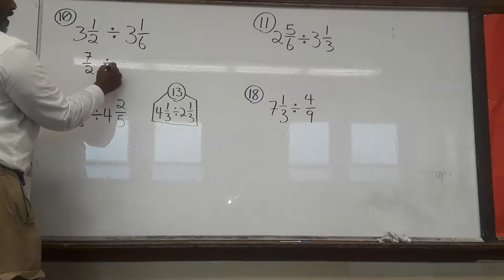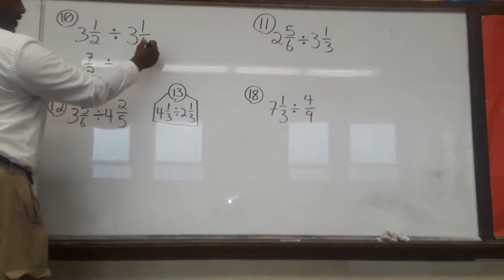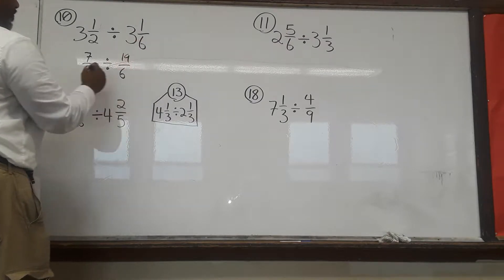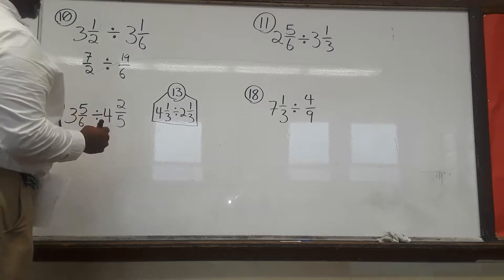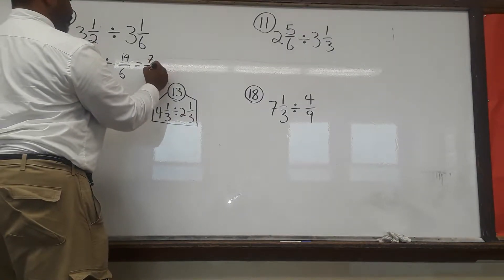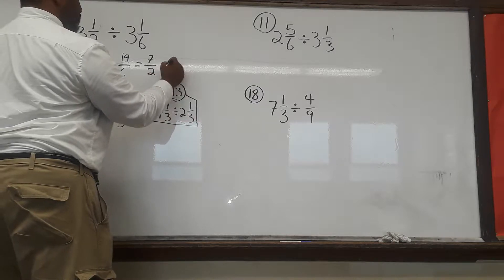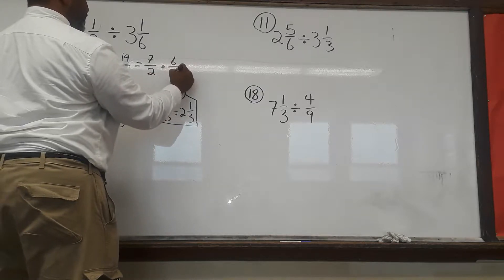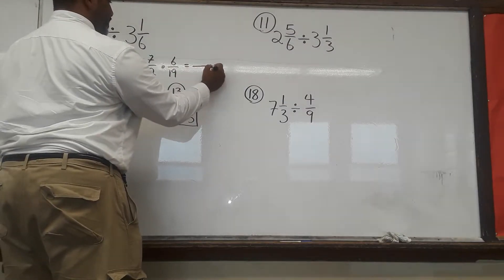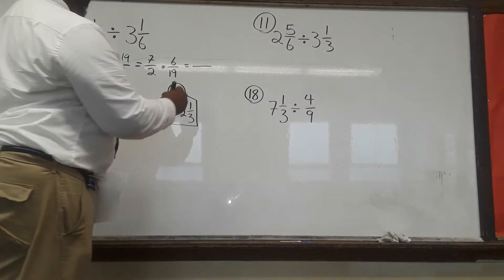That is being divided by, we already know it's going to be a 6 at the bottom, and for the top, 6 times 3 is 18, plus 1 is 19. So, we have 7 over 2 divided by 19 over 6, which equals 7 over 2 times 6 over 19, because we did our keep change flip. Now, we're going to multiply straight across. 7 times 6, that's going to give us 42.